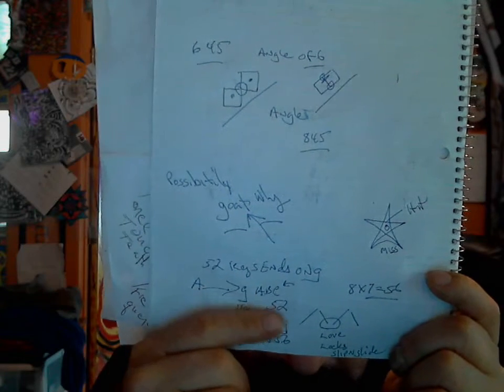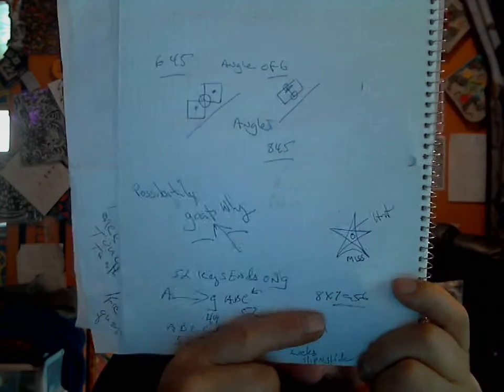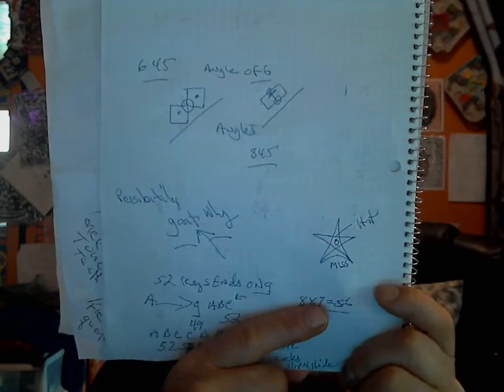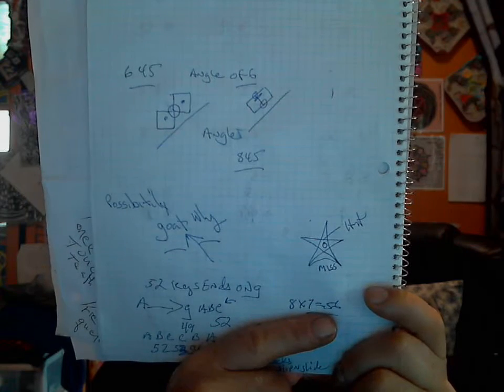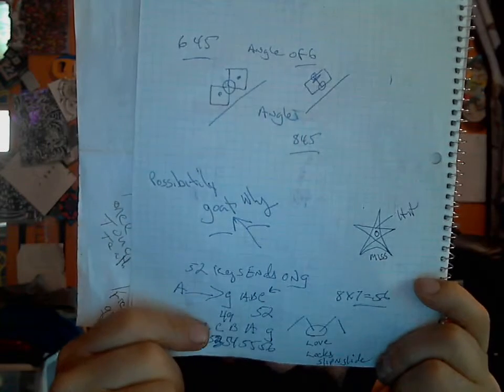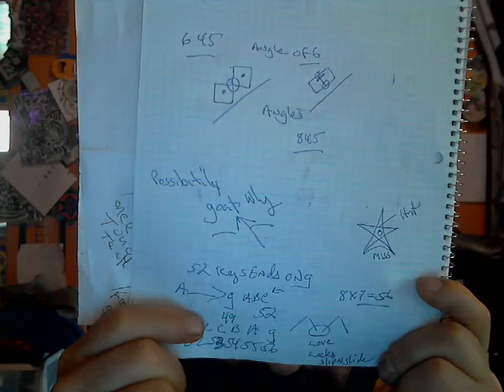Then there's A, B, C equaling to 52. But 8 by 7 to make it complete must be equal to 56. So what you must do is go A,